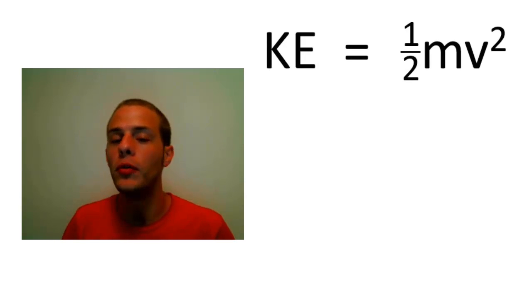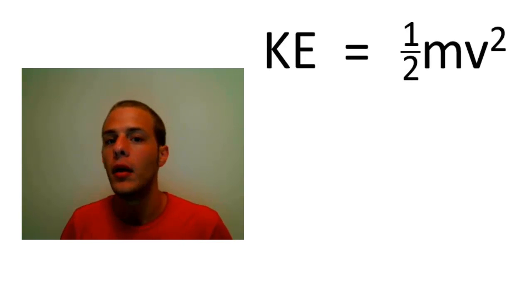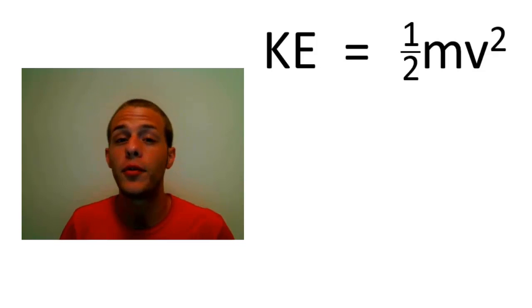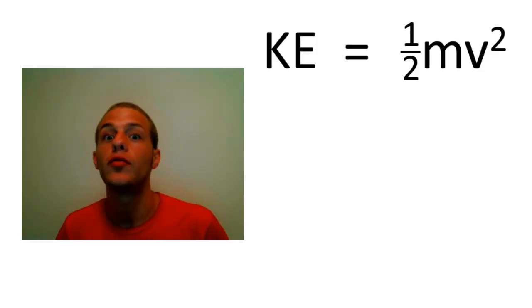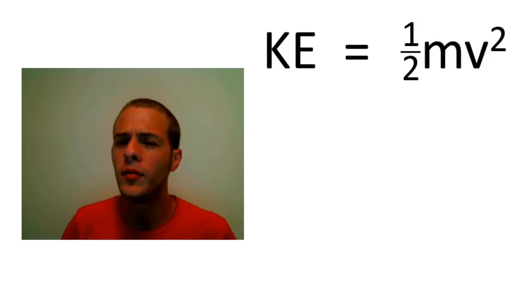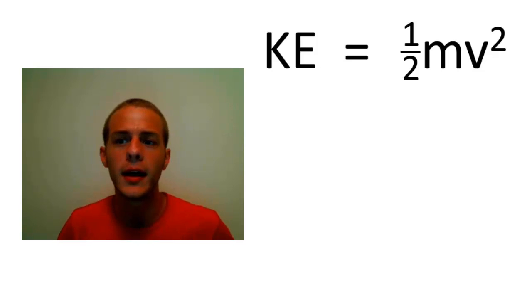Whenever you're talking about motion in chemistry or physics, kinetic energy is almost always going to come up, because kinetic energy is the energy that an object has due to its motion. Something that's moving has kinetic energy; something that isn't moving doesn't. For a gas particle, kinetic energy is related to both the mass and the velocity according to: kinetic energy equals one half times the mass times the velocity squared. Remember that lowercase v is velocity, not volume.